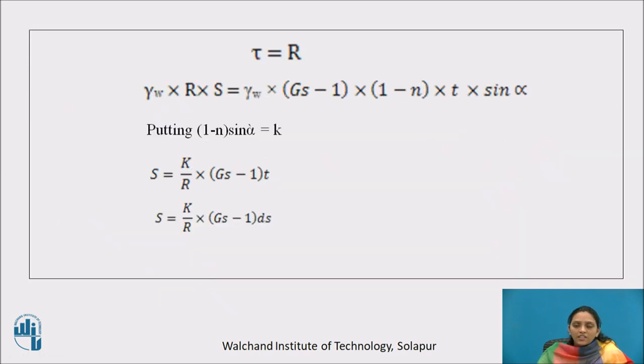When the sediment is just about to flow, that tractive force should equal the frictional resistance. Tractive force is gamma W into R into S. Put R that we just now calculated. To simplify it, put 1 minus N into sin alpha equals K, where K is a special characteristic of sewage that can be determined by experiment. Determine the equation for slope: S equals K upon R into Gs minus 1 into t.